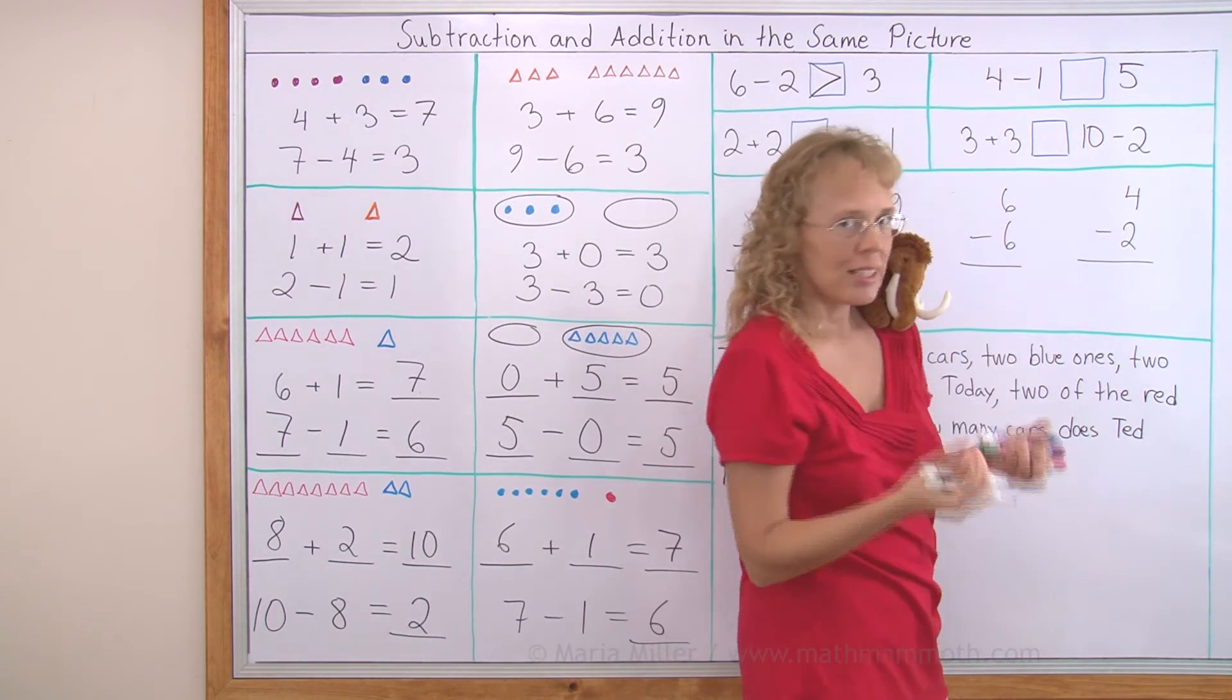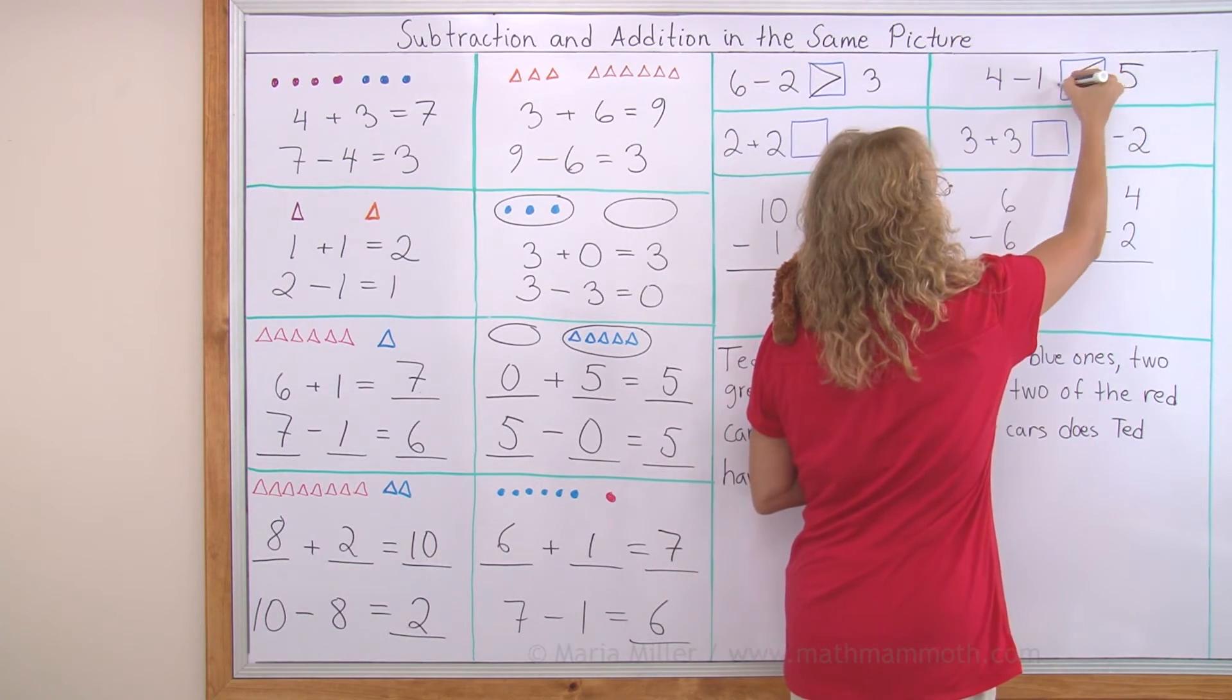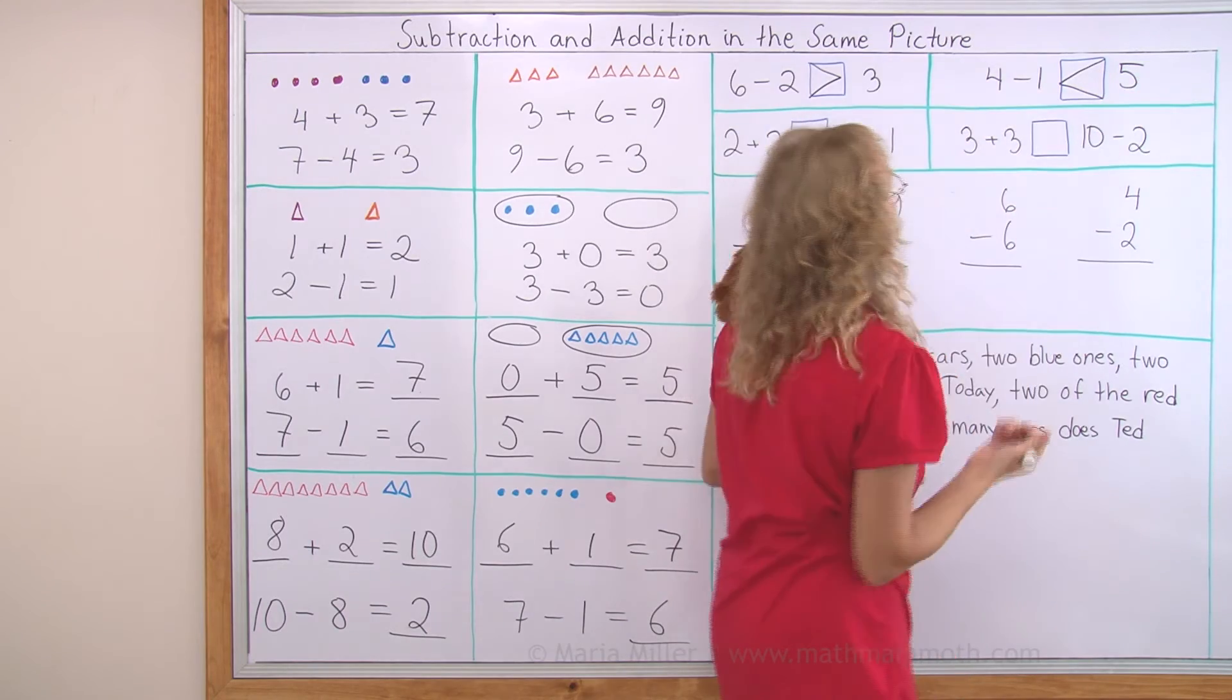4 - 1. That's three. Three and five. Five is greater this time. Or we write three is less than five.